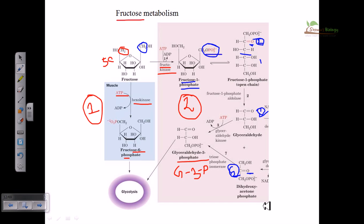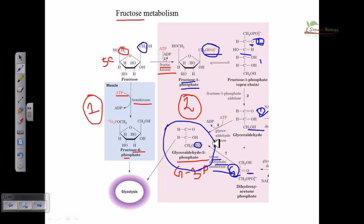Dihydroxyacetone phosphate cannot proceed further directly, so we must generate glyceraldehyde-3-phosphate to carry out the future steps of glycolysis. In the conventional manner, DHAP is converted into glyceraldehyde-3-phosphate with the help of the enzyme triose phosphate isomerase. The glyceraldehyde is also converted into glyceraldehyde-3-phosphate by attachment of a phosphate group onto the third carbon position, snapping phosphate from ATP. Finally, glyceraldehyde-3-phosphate is produced and can be taken through all remaining glycolysis steps to produce pyruvic acid. These are the two pathways of fructose metabolism.